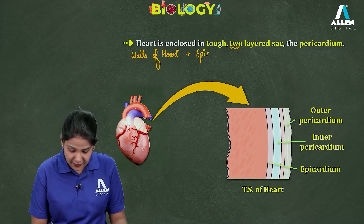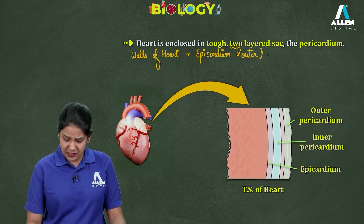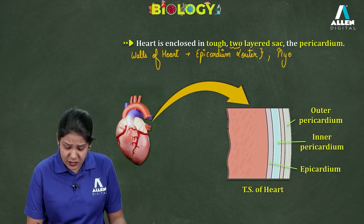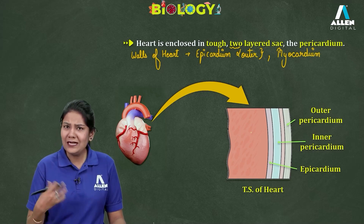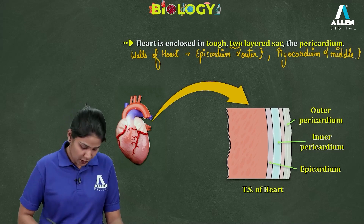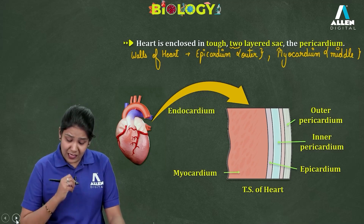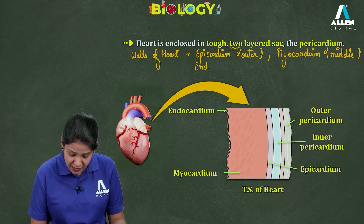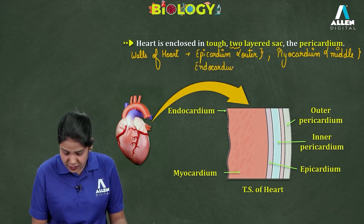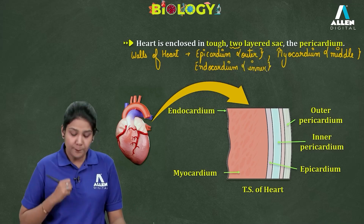The walls of the heart include three layers. The first is the epicardium, which is the outer layer made up of squamous epithelial cells. Next is the myocardium in the middle, which is made up of muscular tissue or cardiac muscles. The innermost layer is the endocardium.